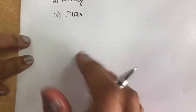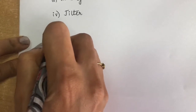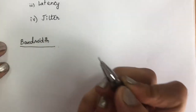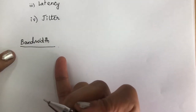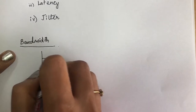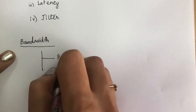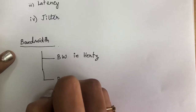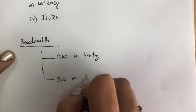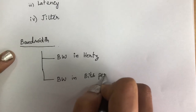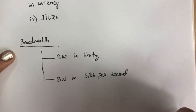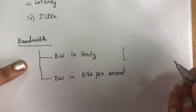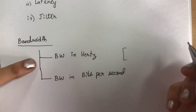First we will see bandwidth. Bandwidth measures the performance of the network, and we can define bandwidth in two ways: one is bandwidth in hertz, and the second is bandwidth in bits per second. Bandwidth in hertz means a range of frequencies contained in a composite signal.